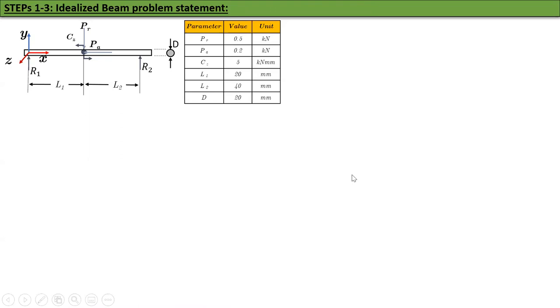Here is the problem now. I have drawn the free body diagram. I have moved all the forces to the x-axis and it's a fairly standard problem. I have a beam of length L1 plus L2, 40 millimeters. I have R1 and R2 as the two reaction forces from the two bearings. PR and PA are the two forces on it, one is the axial force, one is the radial force, and then the couple CZ. PA will not cause transverse deflections so we will not worry about it. PR is the only one that will cause the beam to deflect transversely.